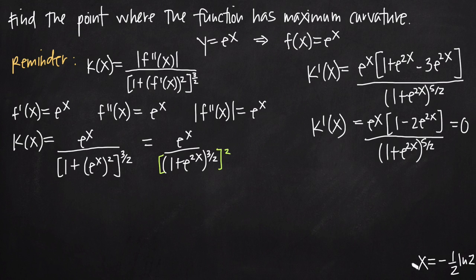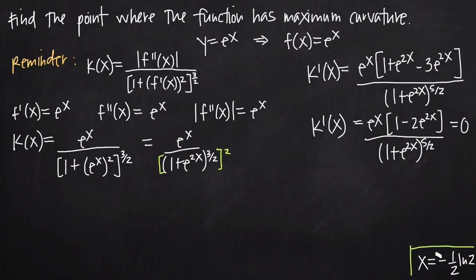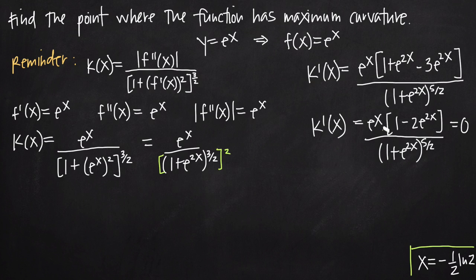Because we only found one critical point — x equals negative 1 half ln of 2 — we know that's where the maximum curvature exists. If we want to prove it, we could take the second derivative of k, plug in this critical point value, and show the result is negative, confirming that this critical point gives a maximum.